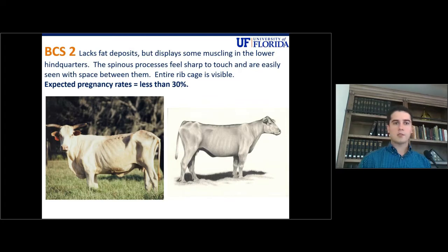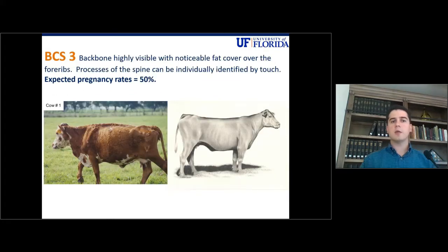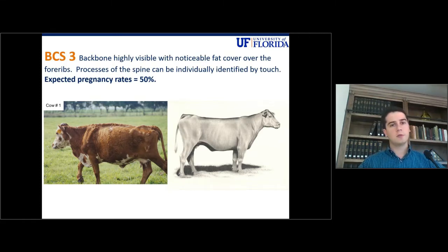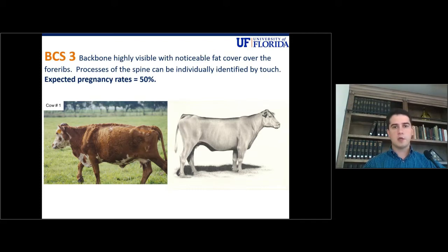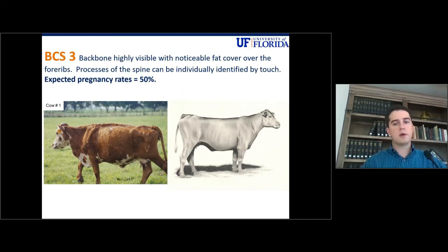Body condition score 3: you would still be able to see the entire ribcage, but it's going to be hard. You can slightly visualize all the ribs. You will be able to see the backbone, but now you can no longer identify the individual processes of the spine. And you will also see more fat and muscle being deposited in the hindquarters. If a cow calves at this body condition score, pregnancy rates won't be more than 50%.